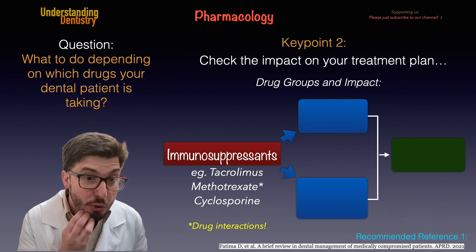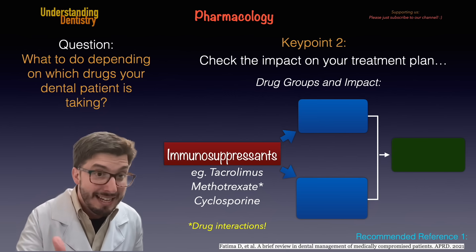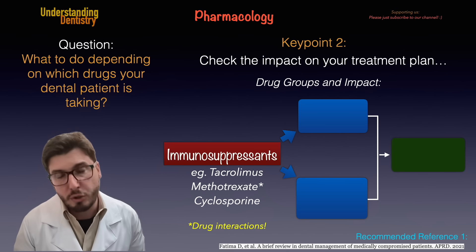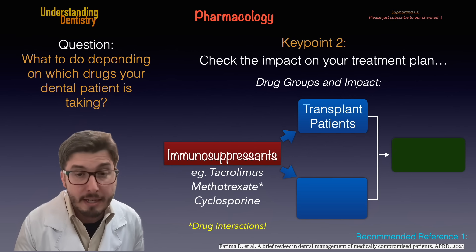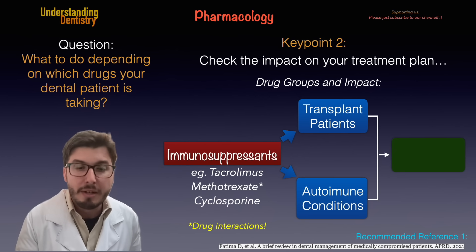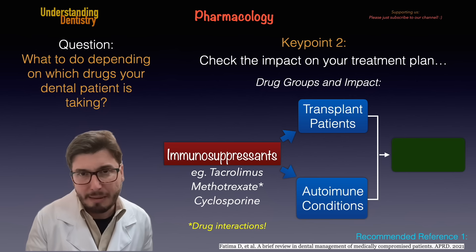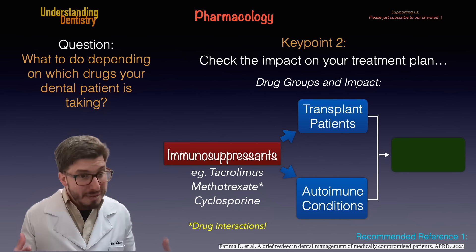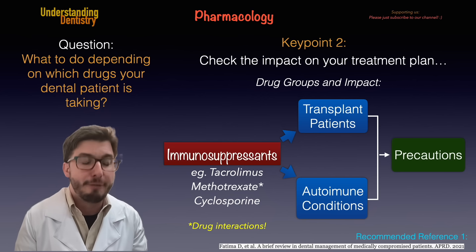Now we have the immunosuppressants. For methotrexate, we have some drug interactions with NSAIDs and even with penicillin, for example. If the patient is taking those medicines, you are going to analyze the situation on an individual basis and not prescribe those medicines. Don't forget that immunosuppressants — we may be talking about transplant patients and patients with autoimmune conditions. So if you are going to do a surgical procedure, maybe you are going to choose a different type of flap, or decrease the size of the flap, or suture a little bit more, making sure the blood clot is forming after an extraction. Those mean precautions we are taking for these patients.